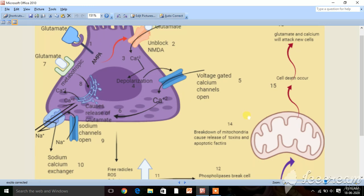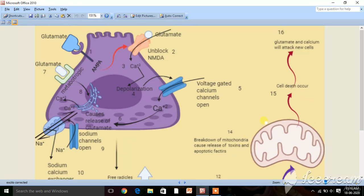The mitochondria will release toxins and apoptotic factors as you can see in the 14th step. In the 15th step, due to these apoptotic factors and toxins, cell death occurs and the glutamate load and calcium load present in the neuron are released. The excess calcium and glutamate released will attack new neurons and degenerate them. This is why most neurodegenerative diseases are progressive—they do not stop because of this process.